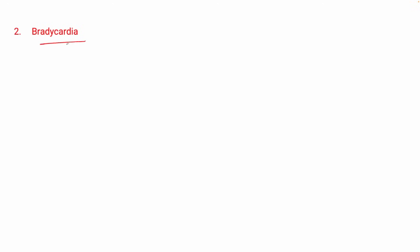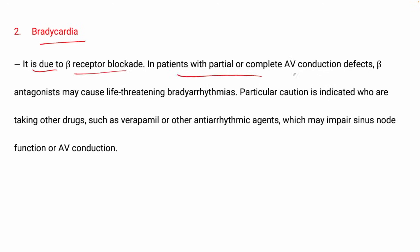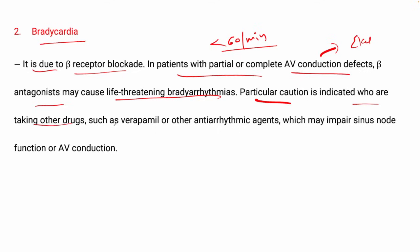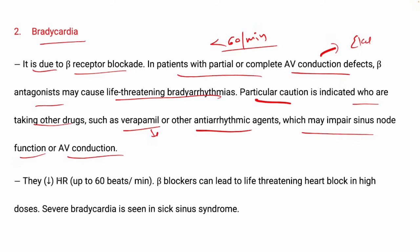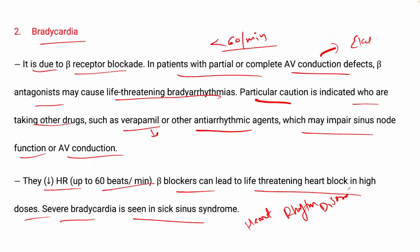The next adverse effect is bradycardia. It is due to beta receptor blockade. In patients with complete or partial AV conduction defects, beta antagonists may cause life-threatening bradyarrhythmias, decreasing heart rate below 60 per minute. Particular caution is needed for patients also taking drugs such as verapamil or other anti-arrhythmic agents, which may impair sinus node function or AV conduction. High doses can lead to life-threatening heart block, and severe bradycardia is seen in sick sinus syndrome.